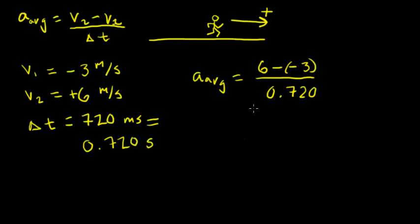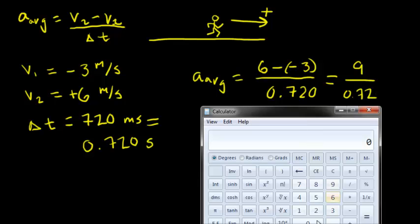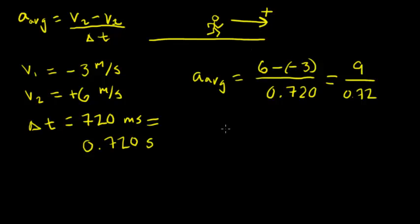So we'll go to the calculator and calculate 6 minus negative 3, which is 9, divided by 0.72. So 9 divided by 0.72, and I get 12.5. So my average acceleration equals 12.5.